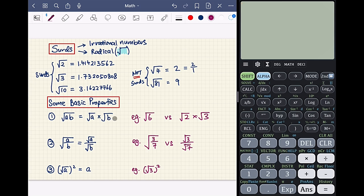I'm going to numerically verify property 1. If we key into the calculator square root of 6, we get 2.44948974278. And if we key in square root of 2 multiplied with square root of 3, they are both the same value. So we say that square root of 6 can be written as square root 2 multiplied with square root 3.